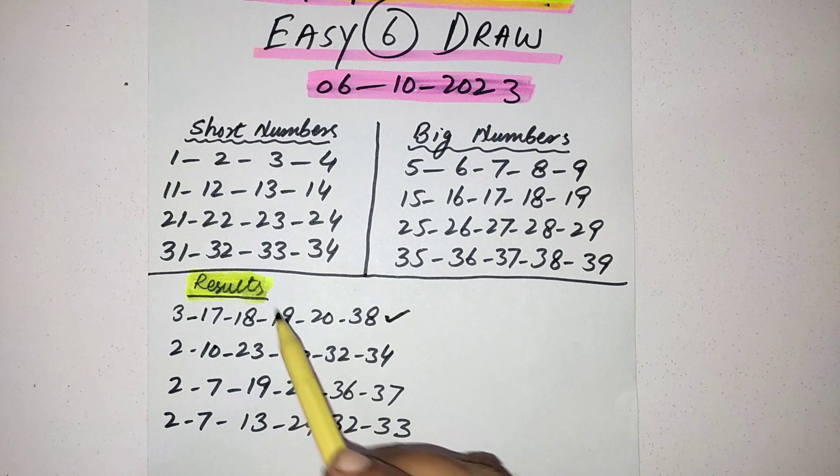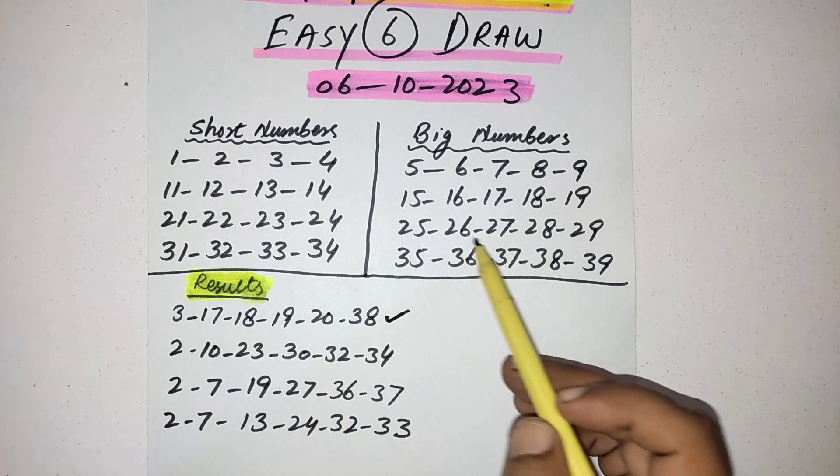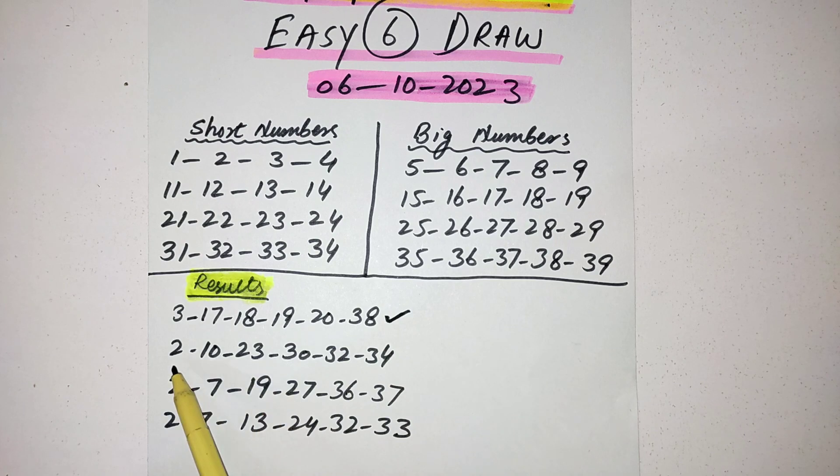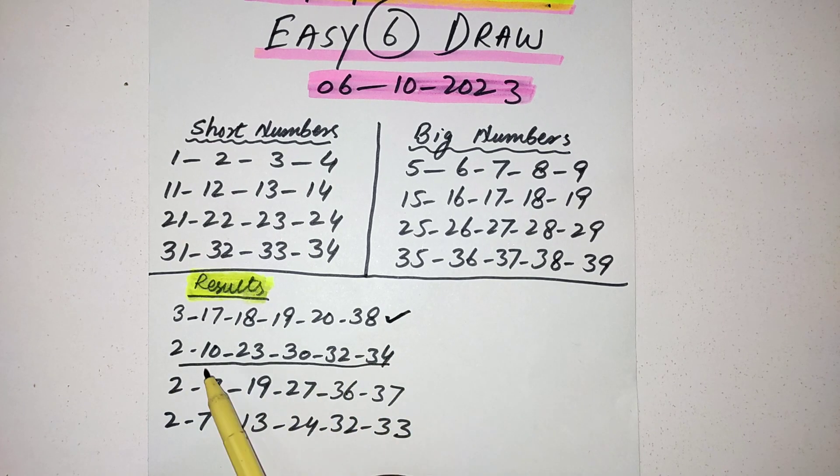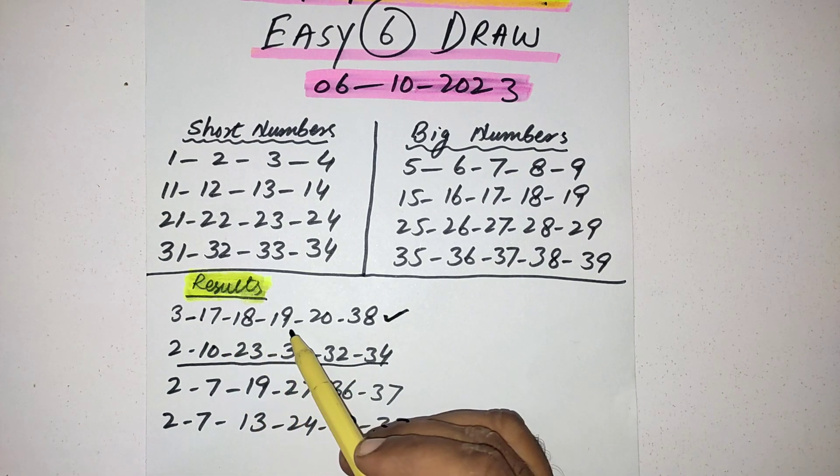Then in the next draw you can see all numbers are short: 2, 10, 23, 30, 32, 34, no big number. In first draw 17, 18, 19, 38, four numbers big.